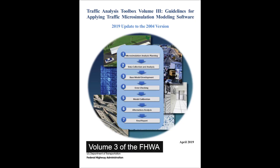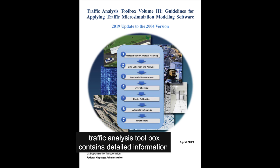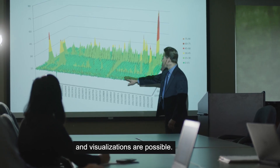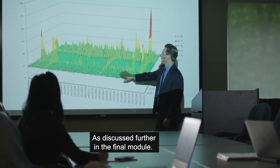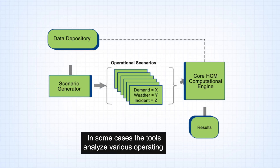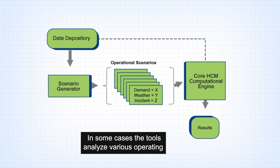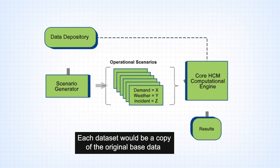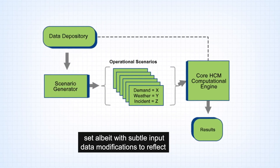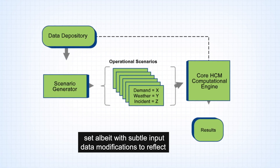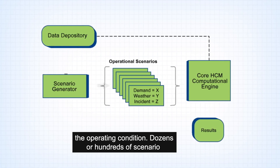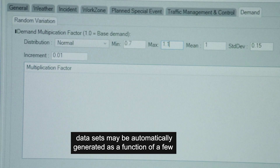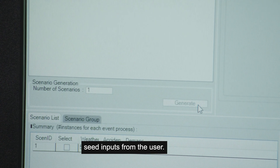Volume 3 of the FHWA Traffic Analysis Toolbox contains detailed information on model calibration. Many output performance measures and visualizations are possible, as discussed further in the final module. In some cases, tools analyze various operating conditions through the generation of individual scenario data sets. Each data set would be a copy of the original base data set, albeit with subtle input data modifications to reflect the operating condition. Dozens or hundreds of scenario data sets may be automatically generated as a function of a few seed inputs from the user.